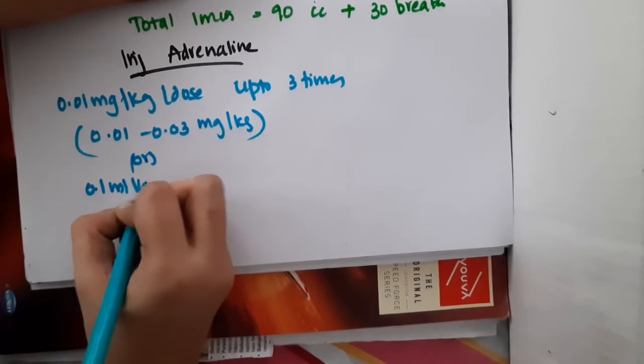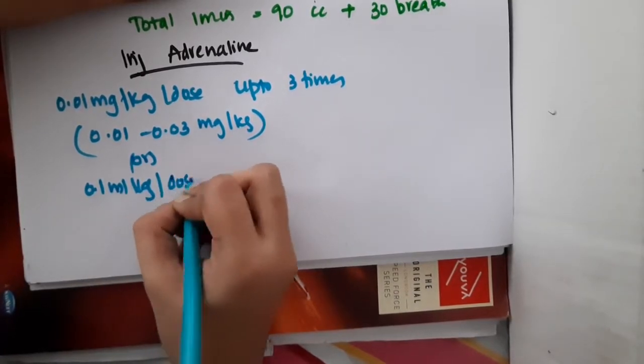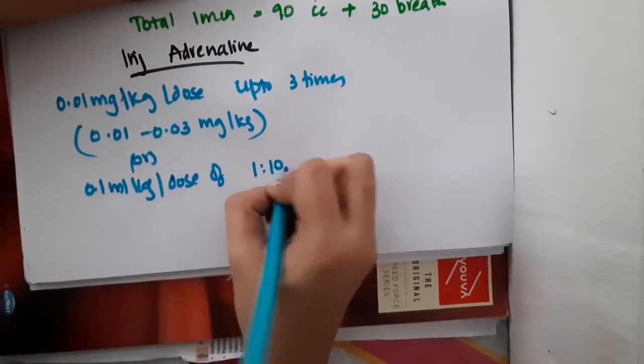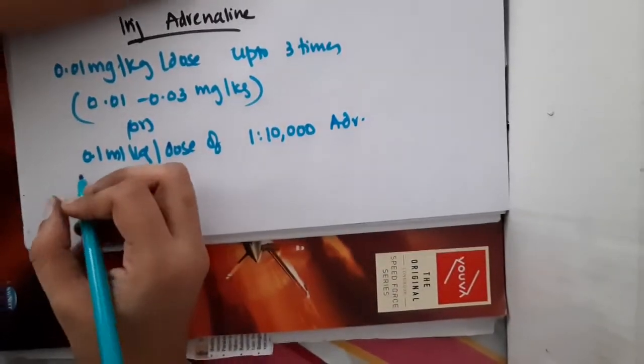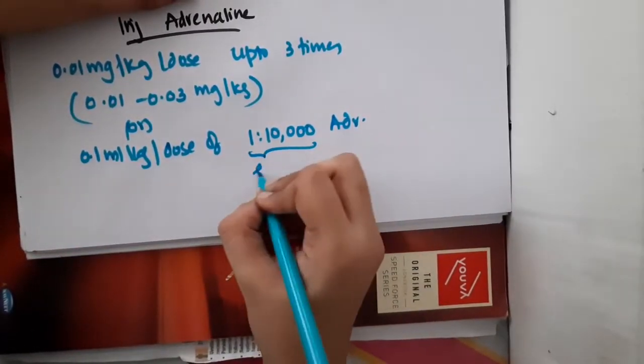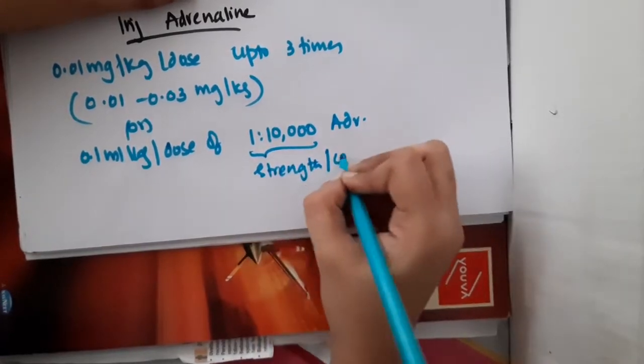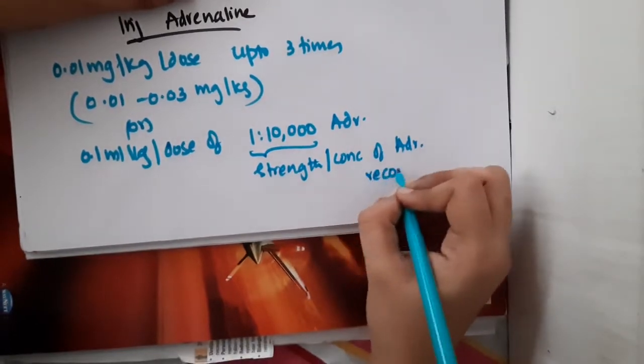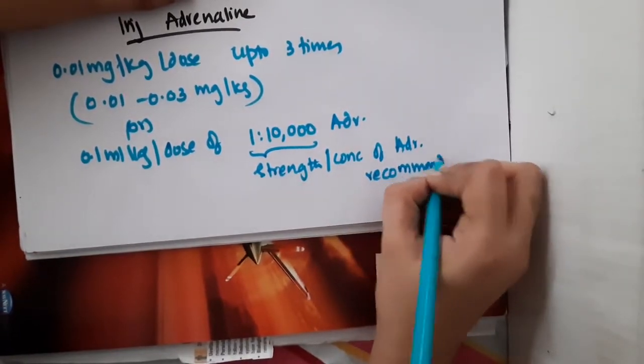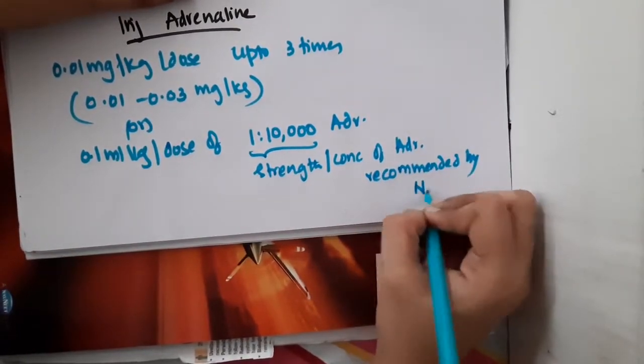Or you can use 0.1 ml per kg per dose of 1 in 10,000 concentration of Adrenaline. So this 1 in 10,000, what is this? This is the strength or concentration of Adrenaline which is recommended by NRP,